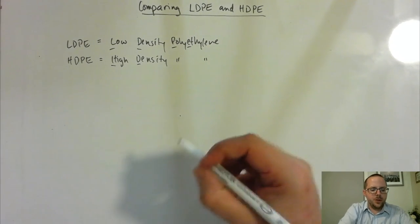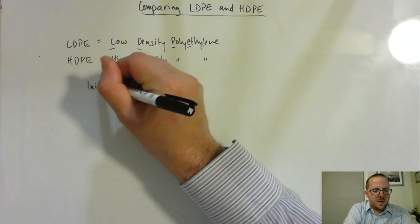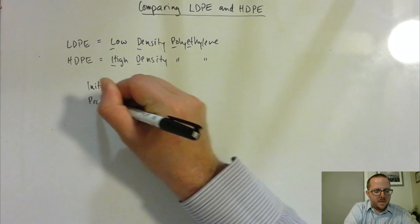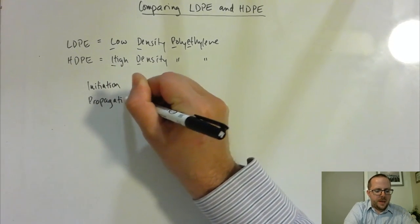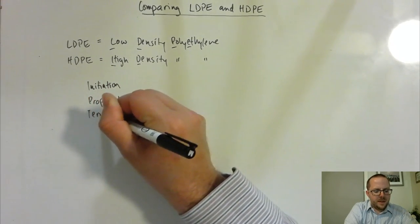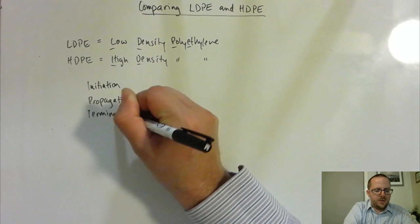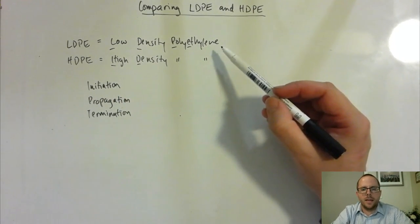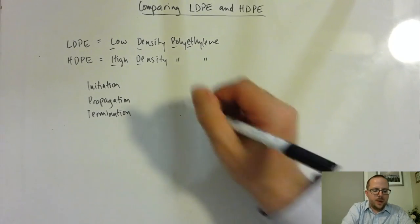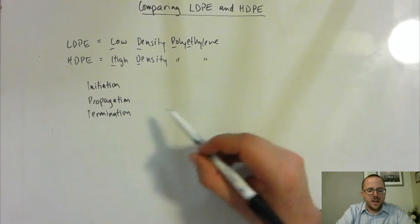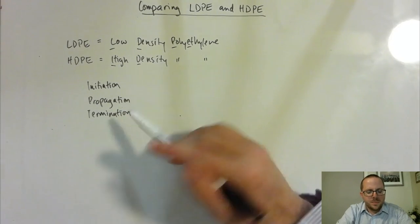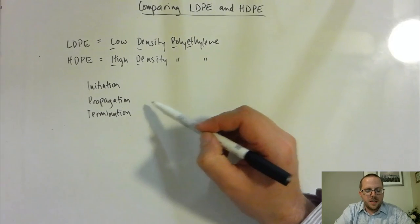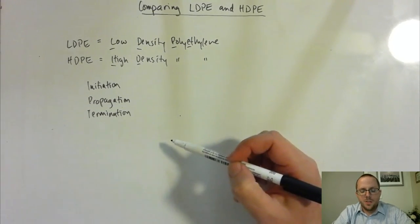Okay, so you will remember in the previous video, we looked at the concepts of initiation, propagation, and termination as the three main steps involved in the formation of a polymer like polyethylene, where we take something that forms a radical to help initiate the process, and then it continues to propagate, and then eventually the process gets terminated.